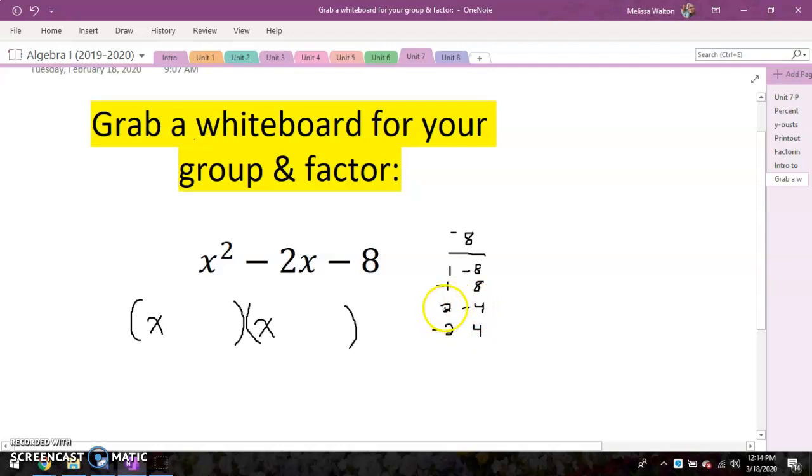But yes, our two values that multiply to negative eight that add up to negative two are these two. We have a two and negative four. So I'm going to go ahead and factor this here. I have plus two here and negative four here.